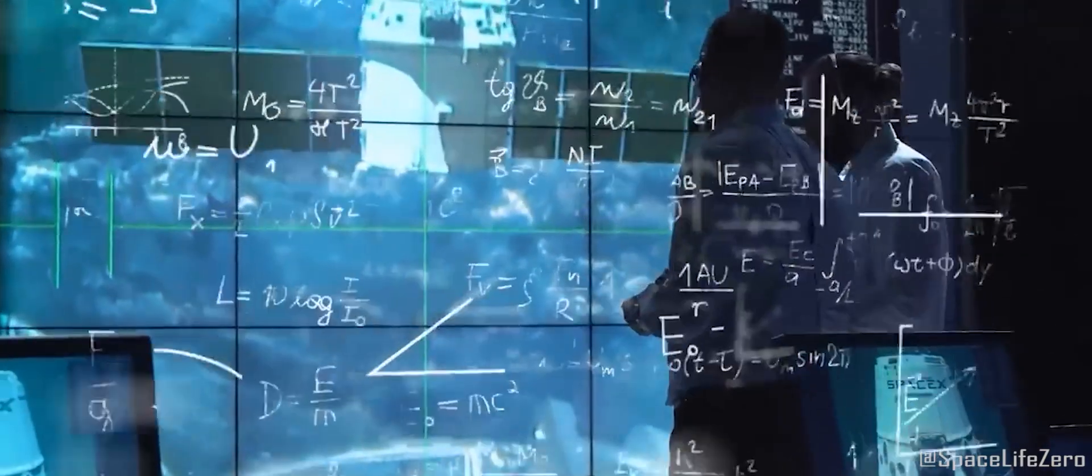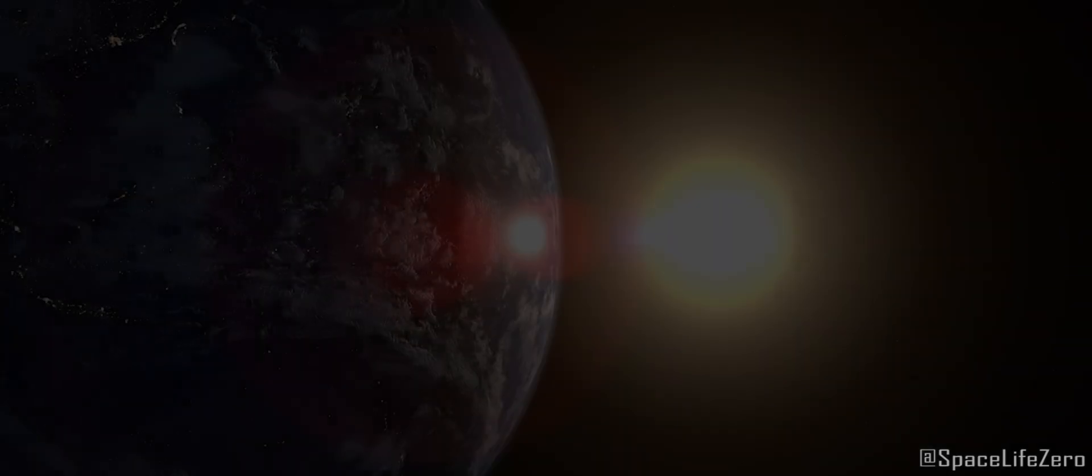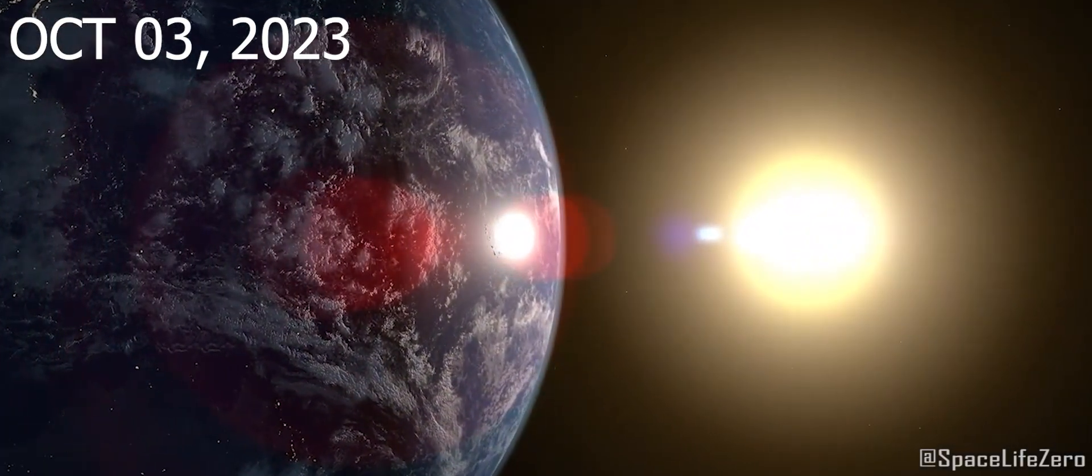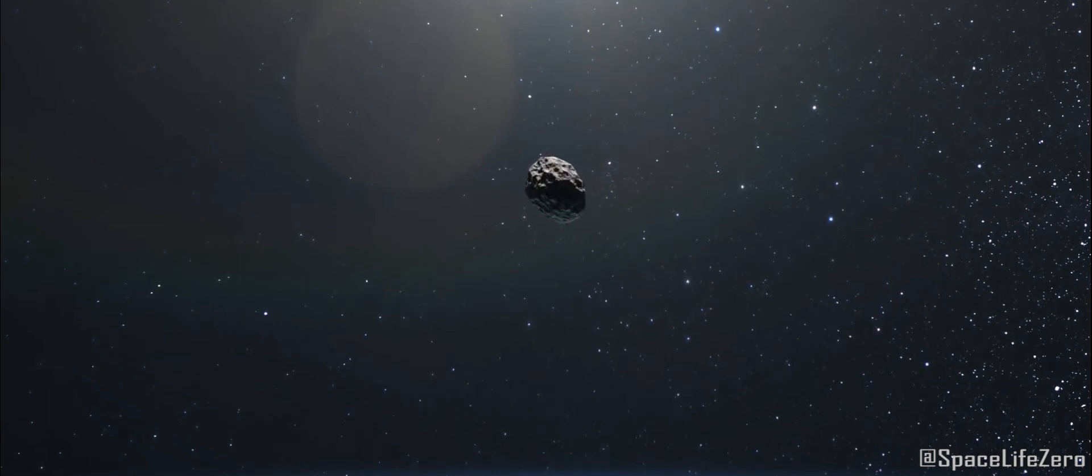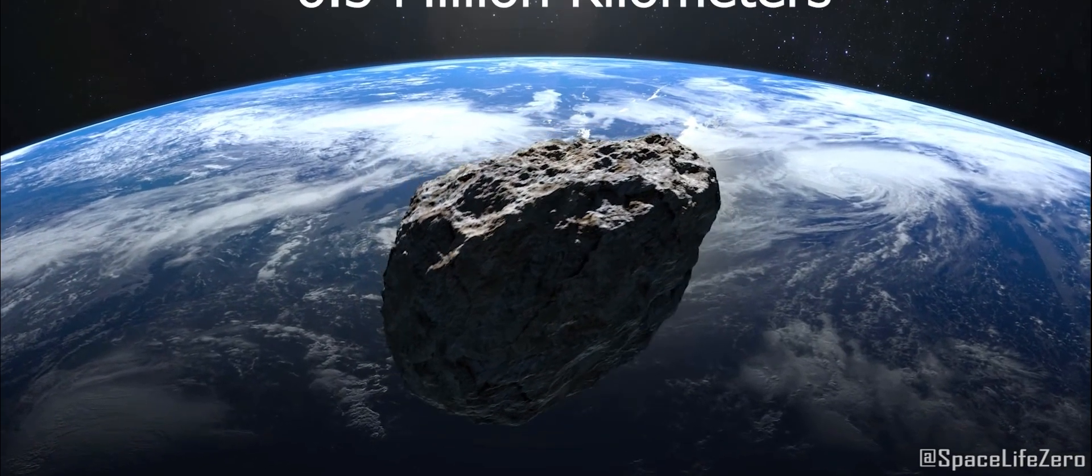Now, the big question: how close is this asteroid going to get to Earth? Well, on October 3rd, 2023, PHA 2008QY will come within about 6.3 million kilometers of our planet.